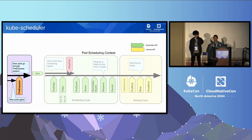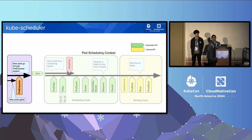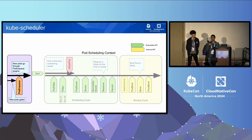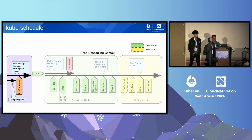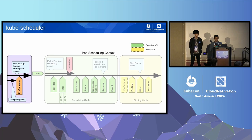After the scheduling cycle concludes and a decision is made, we proceed into the binding cycle, which tells the API server what our decision was. Because this is a communication with the API server, it happens asynchronously so we can use the CPU again for the next scheduling decision. More recently, we added another stage called pre-enqueue, which allows external operators in the Kubernetes system to weigh in on when to start the scheduling. For example, Kueue uses scheduling gates to make decisions before the scheduler, and once ready, removes the scheduling gate so the Kube Scheduler takes over.